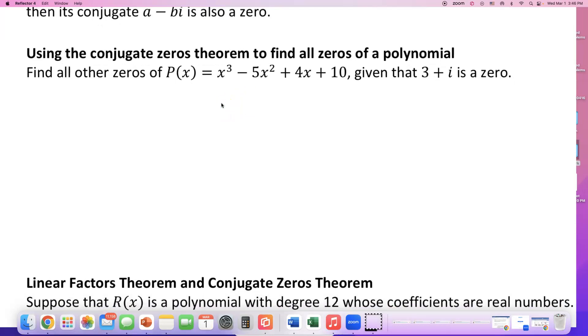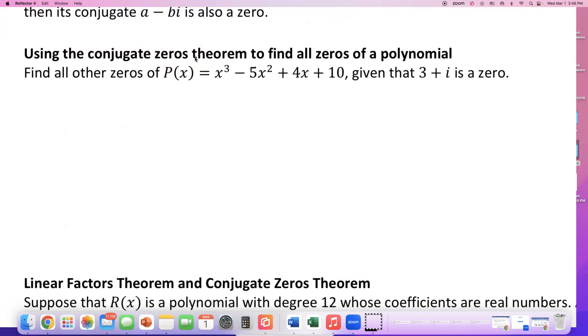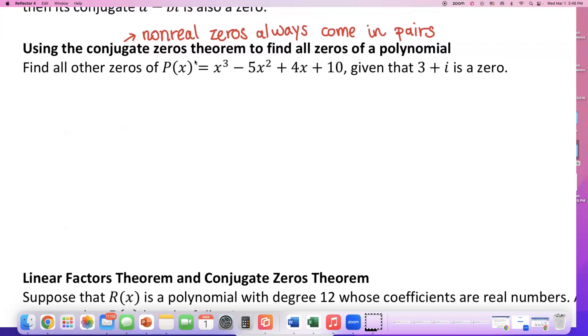Now listen, there is a long way of doing this, a pretty algebra-heavy way, but I want to talk about using what we just said to think of a shortcut. Using the conjugate zeros theorem, which states that non-real zeros always come in pairs, they're always with their partner. It's never going to come by itself.